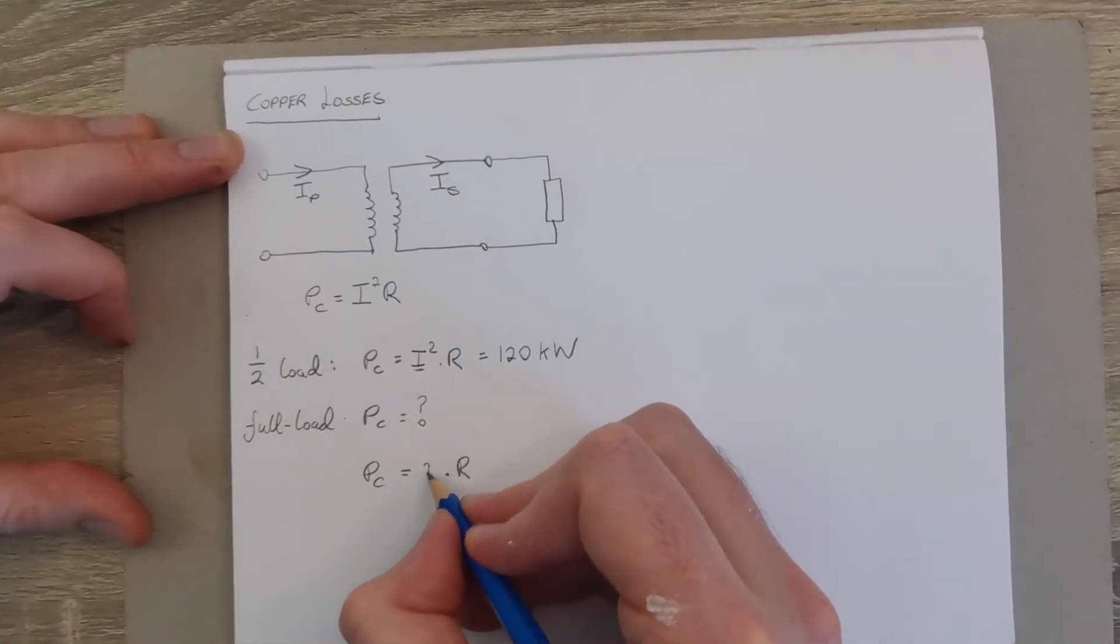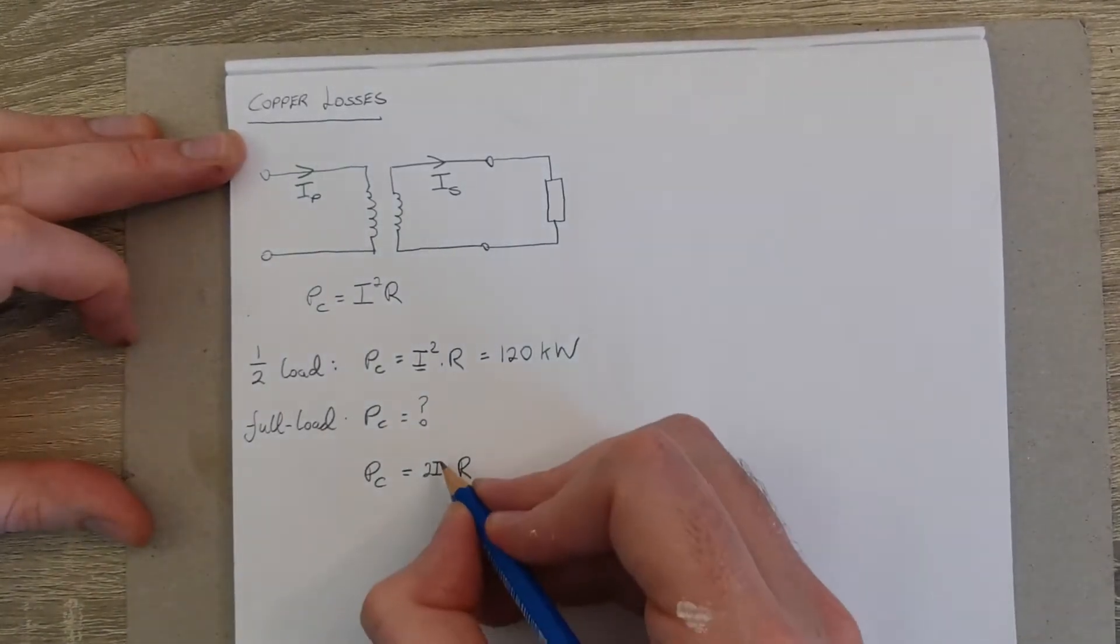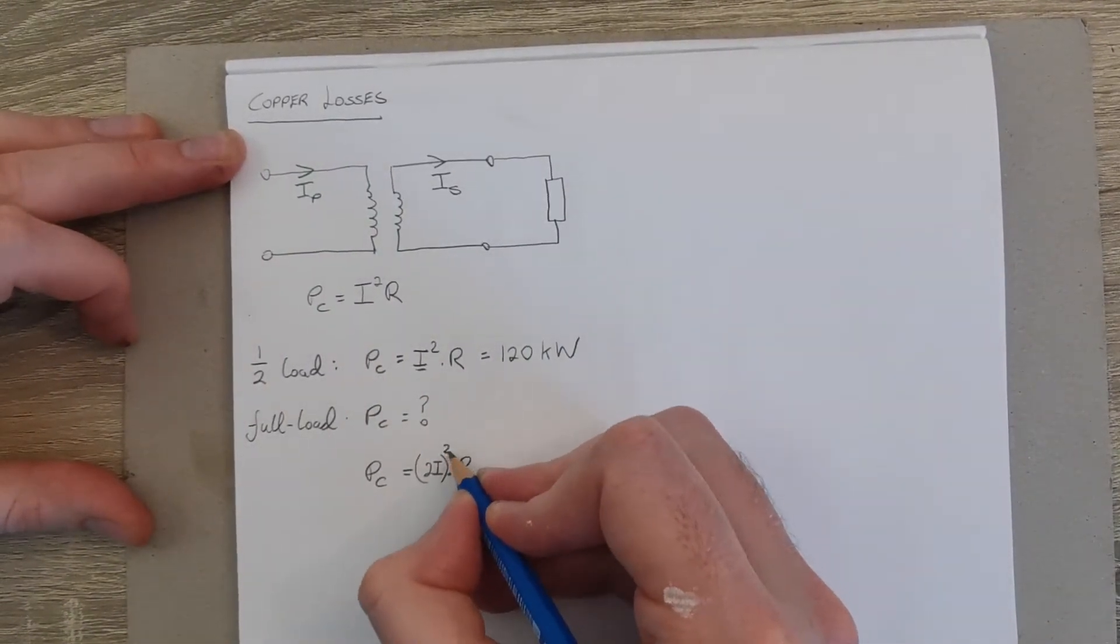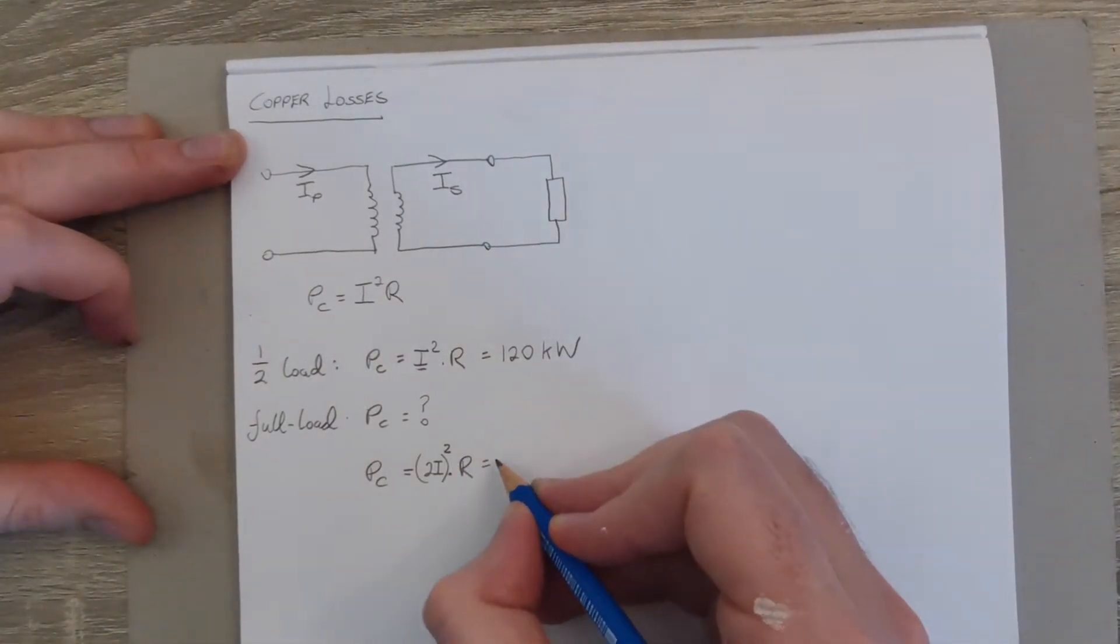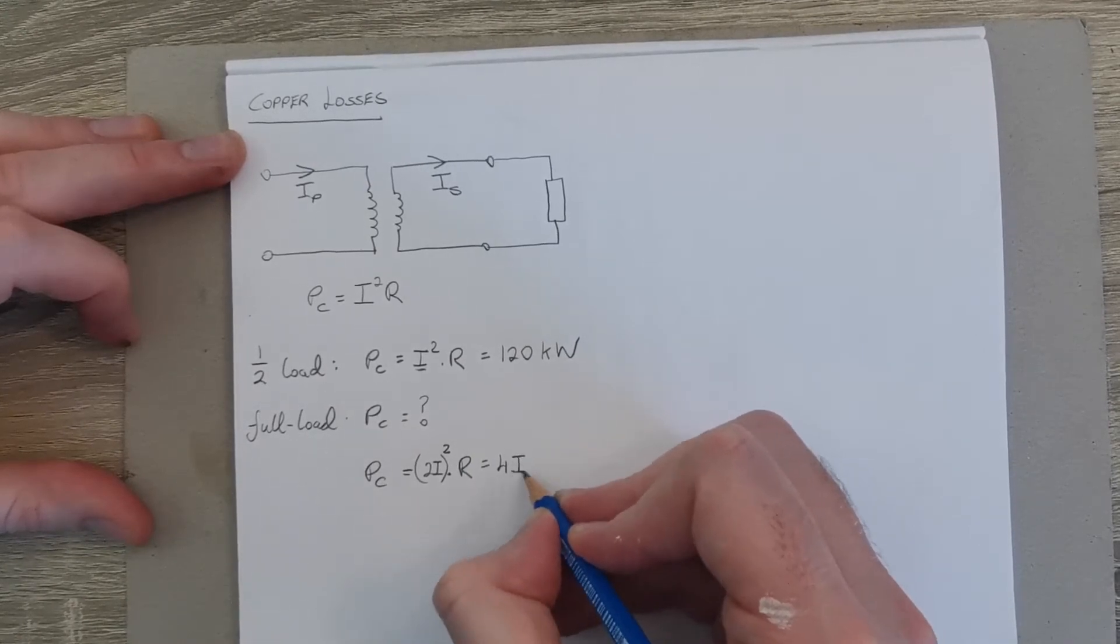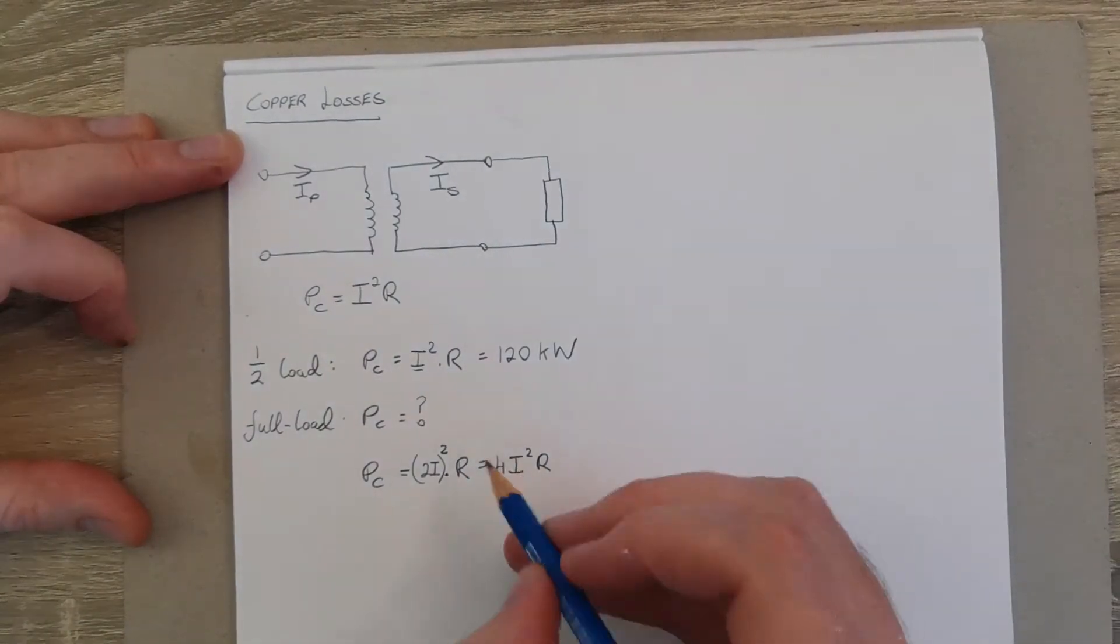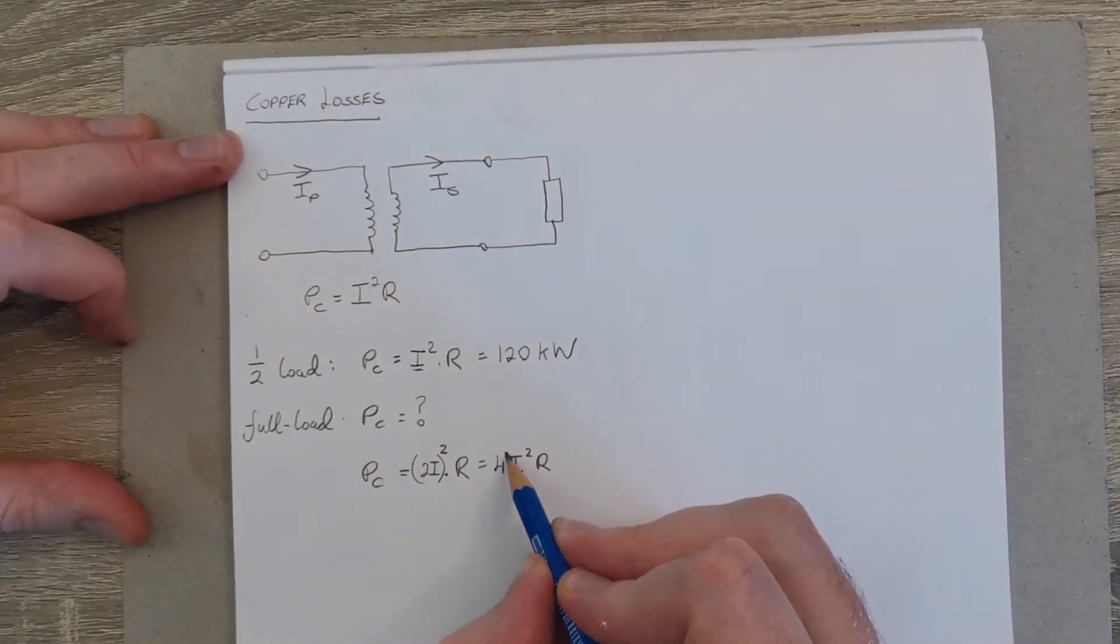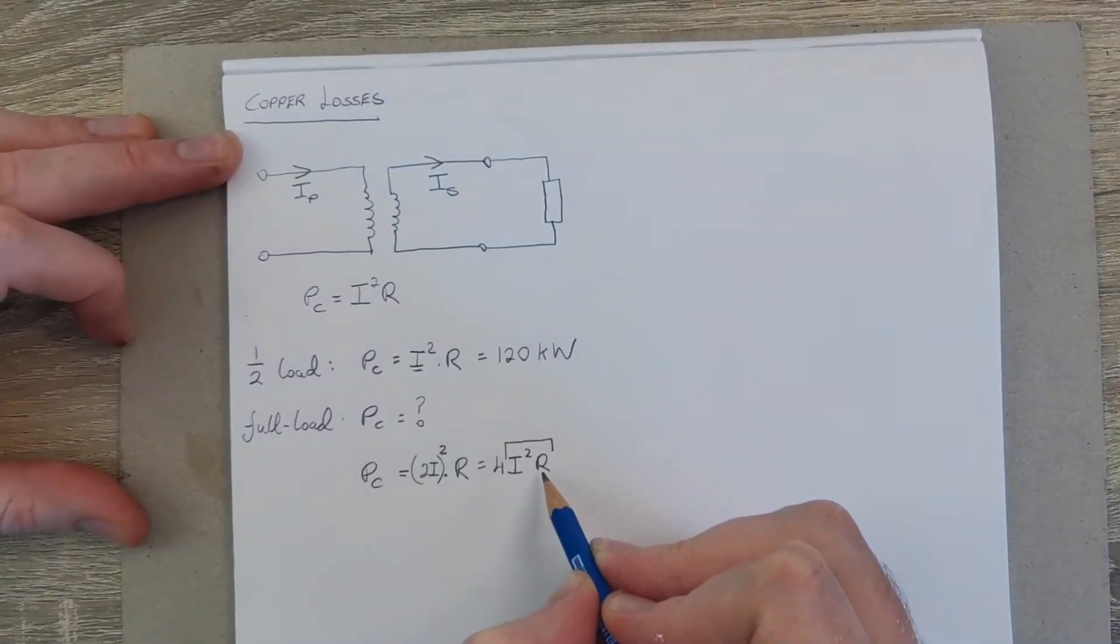Now we square that 2I by 2I, it's going to give us 4I squared R. And if we look at this part here, we have a value for I squared R already.